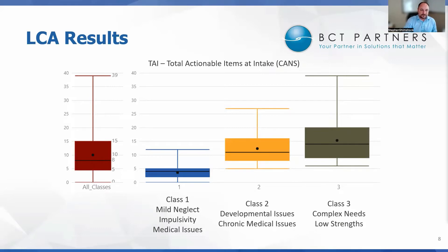Class one had mild neglect, impulsivity, and medical issues, but their needs were much lower than the other two classes, as shown in the blue bar. The yellow bar in the middle represents class two, marked by developmental issues and chronic medical issues. Class three had more of your classic complex needs and low strengths — the kind you would see in a residential treatment foster care program.